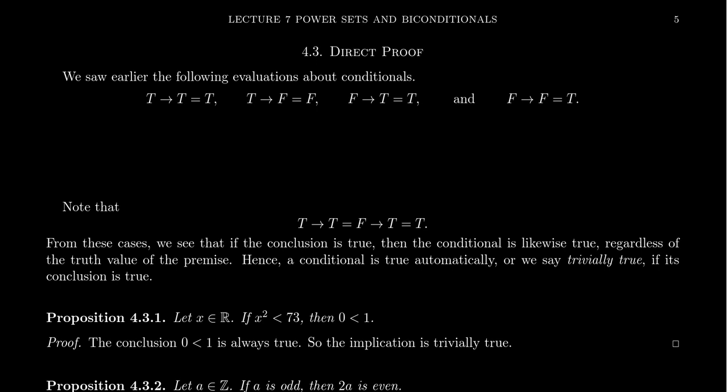To understand what this terminology means, let me remind us of the four possible evaluations we can have with a conditional statement. A conditional statement has a premise P and a conclusion Q — primitive statements that can themselves be true or false. The truth values of the premise and conclusion relate to the truth value of the conditional, which is itself a compound statement. These are the four possibilities.